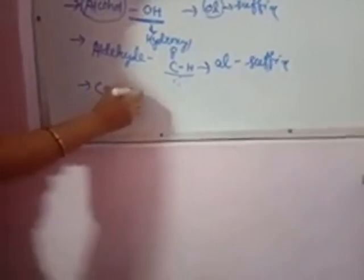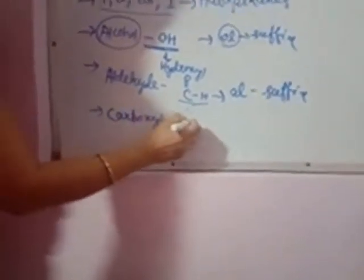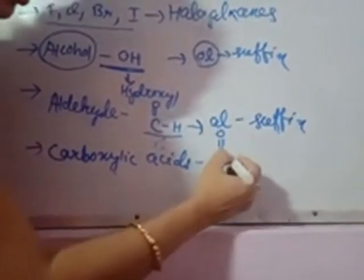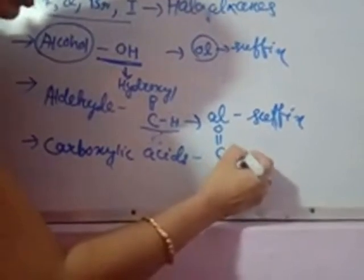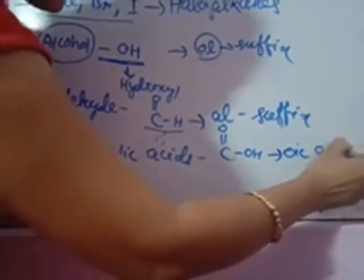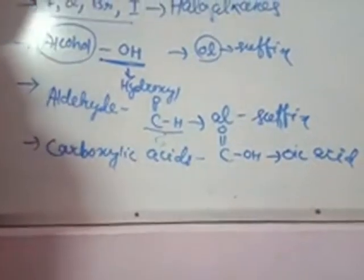Another functional group is the carboxylic group, or carboxylic acids. The representation of this group is: C double bond O, single bond O, then H — this is the COOH representation. In this group, examples are ethanoic acid, propanoic acid. The suffix at last is -oic acid. This suffix group is called the oic acid group.